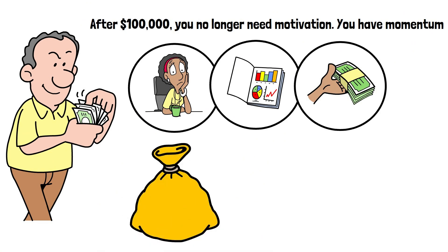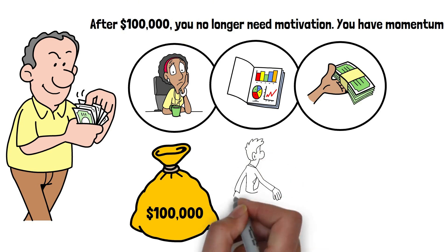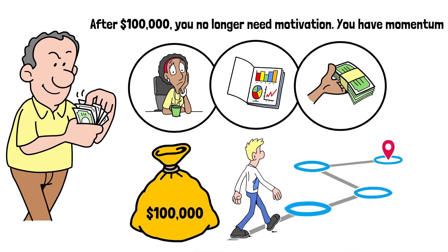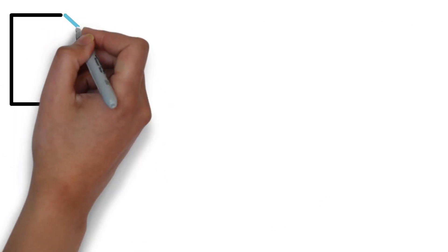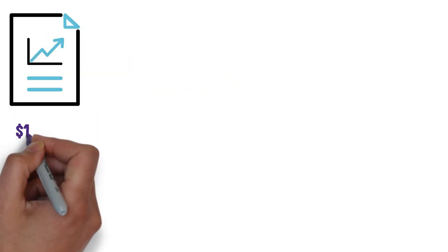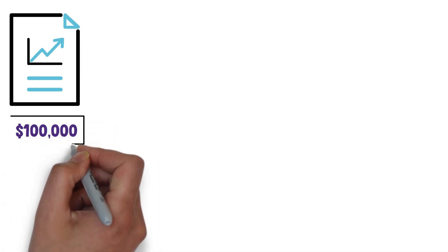People who reach $100,000 behave differently from the people who never do. And that behavioral shift alone is one of the biggest reasons the rest of the journey becomes easier. Of course, seeing how fast compounding accelerates over time after you hit $100,000 doesn't hurt either. Because $100,000 is when your money starts outworking you.